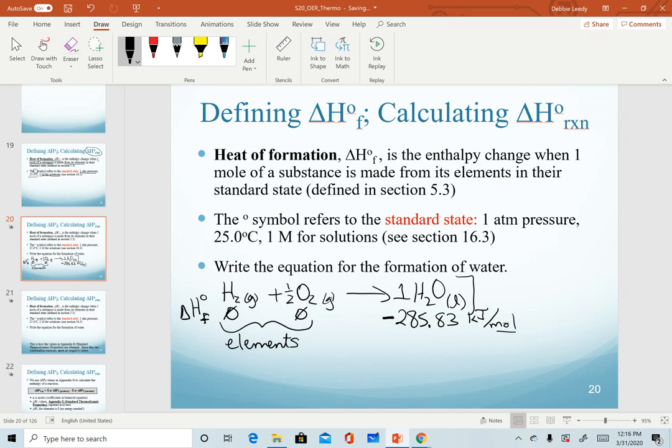So when you look up enthalpy of formation values, two key things. One is for elements, they will be zero. And for most substances, they will have a negative enthalpy of formation value because they're combination reactions. I say most. There are exceptions to this. Some values will be positive, but you can predict a negative value for most of these.